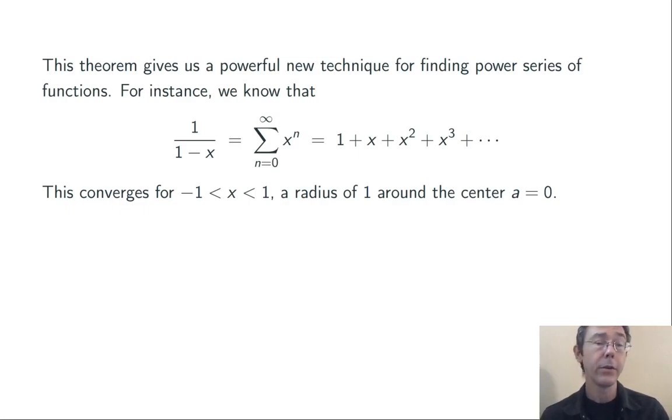This gives us a very powerful technique for finding power series for new functions. In particular, we have this one really standard power series corresponding to the geometric series. 1 over 1 minus x is just the sum of x to the n, which converges for the absolute value of x less than 1.